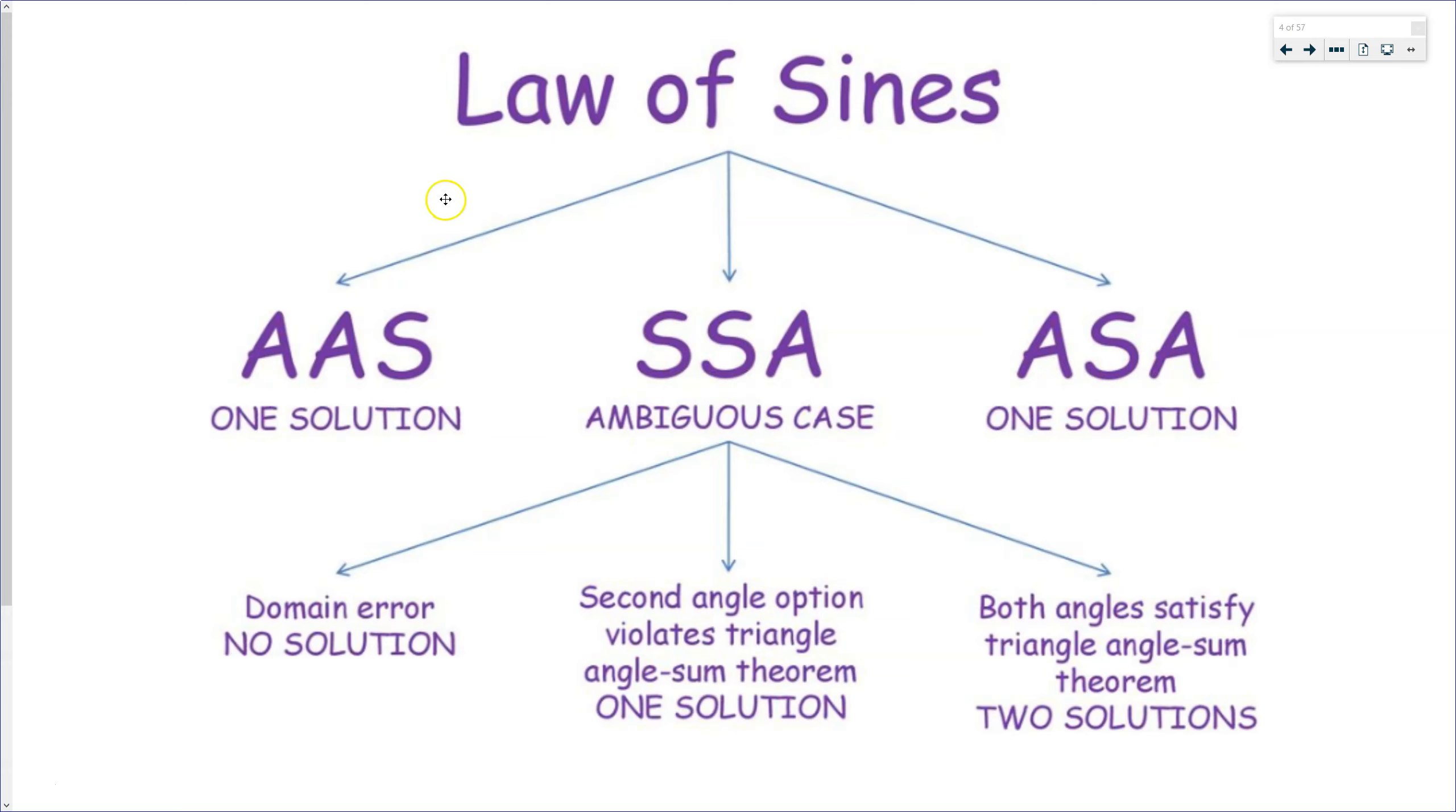And by using this flowchart, you can just directly see, well, I know I'm going to have one solution. Those are the easy cases, the ones I gave you yesterday. And if you're in the middle with the SSA case, this is the most tedious case that you're going to get this section. And we're going to have to go through each and every possibility. And I'll show you how to do that with three examples today.